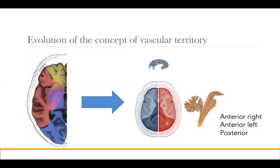There are only three distinct vascular territories recognized in the CPT world: the right and the left carotid or anterior territory, as well as the posterior territory or the vertebral-basilar territory. This is important as there are two vertebral arteries that only lead to one territory, so the work done in both of these arteries may be described as the same territory.